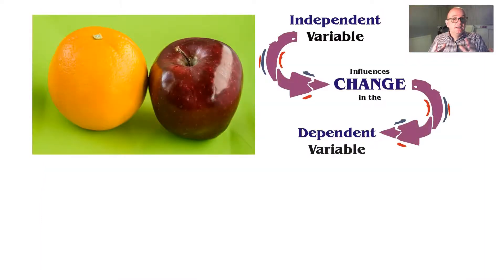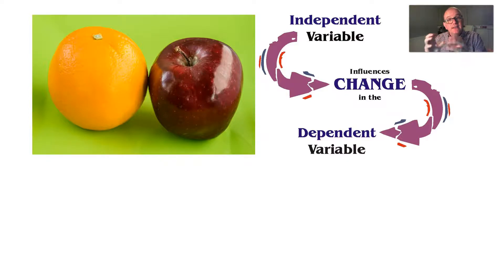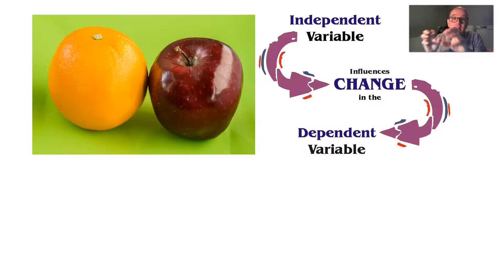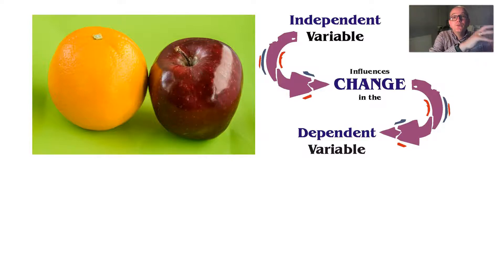In psychology and other sciences, the two groups or the one thing that we're varying is called an independent variable. And what we're doing is looking at whether changing those two groups influences something else, called the dependent variable.